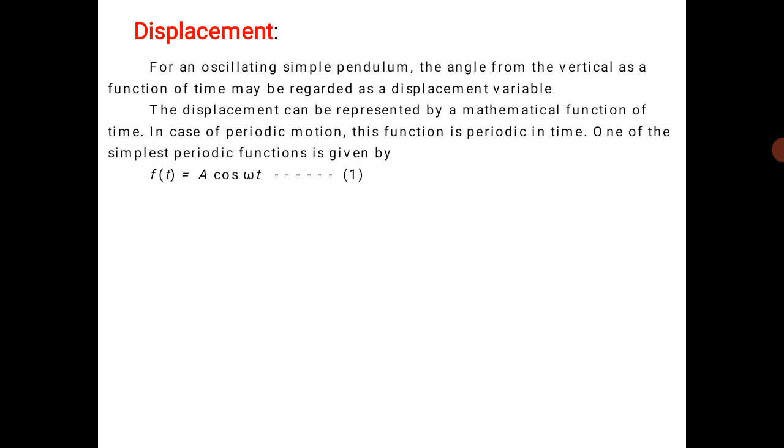As a function of time, that number we can call as A, and it is called amplitude. Amplitude means it is the maximum displacement or the maximum distance from the equilibrium position. We can call it one vibration.